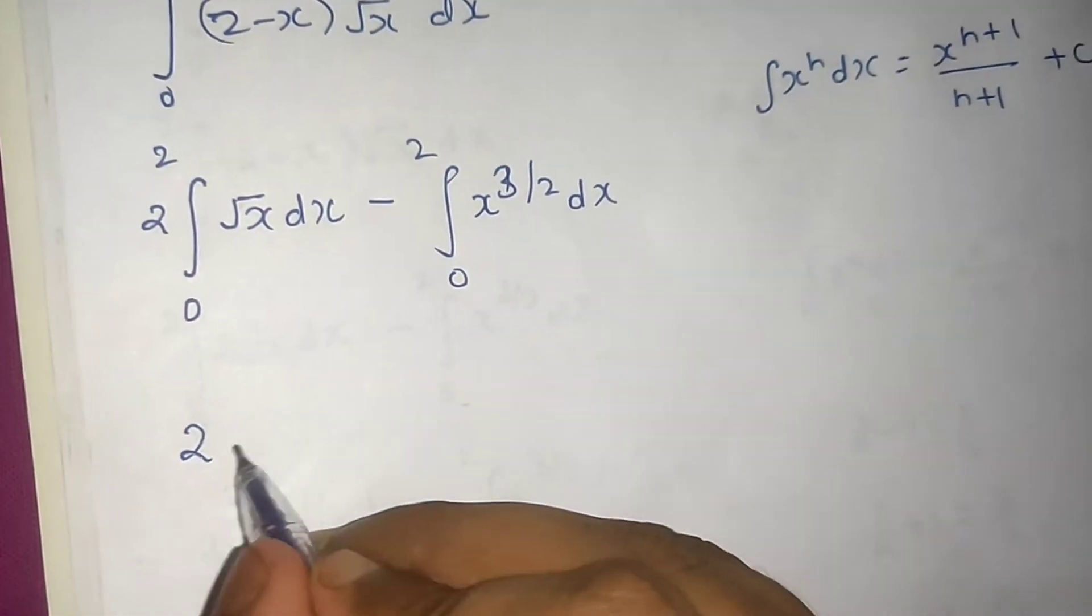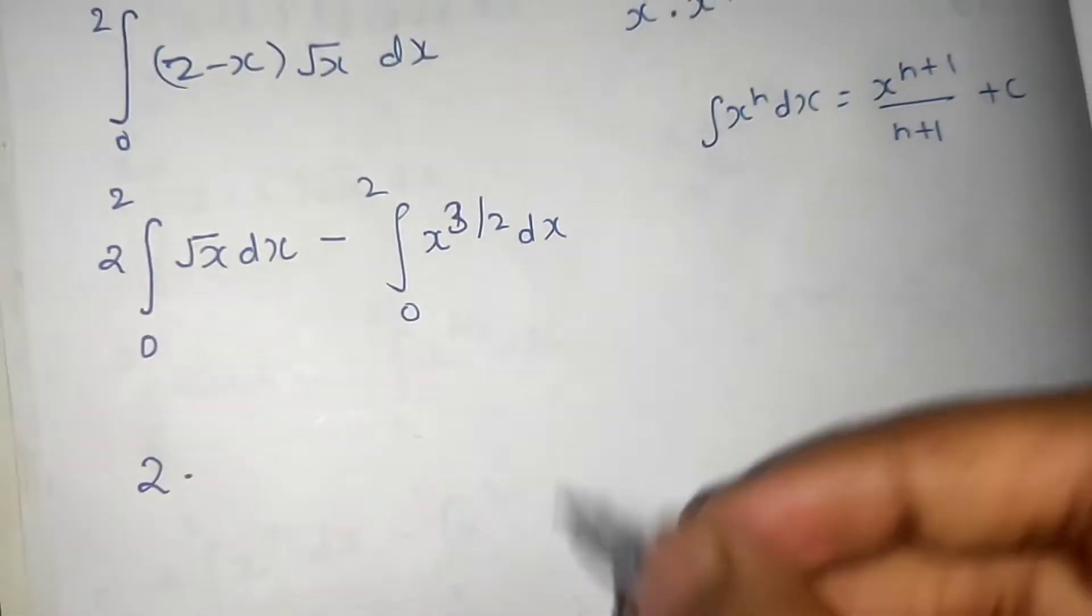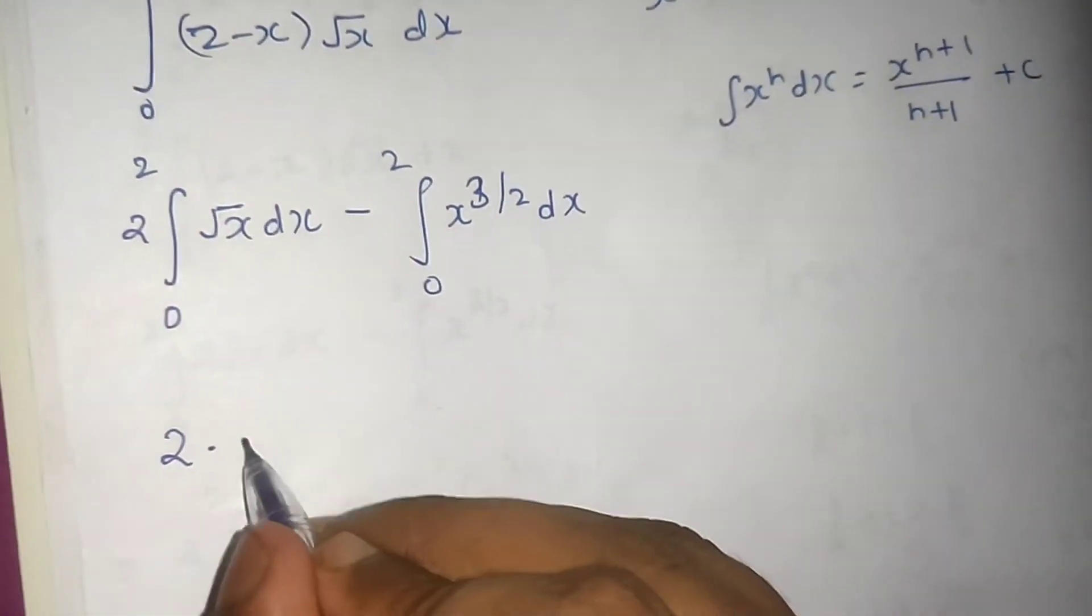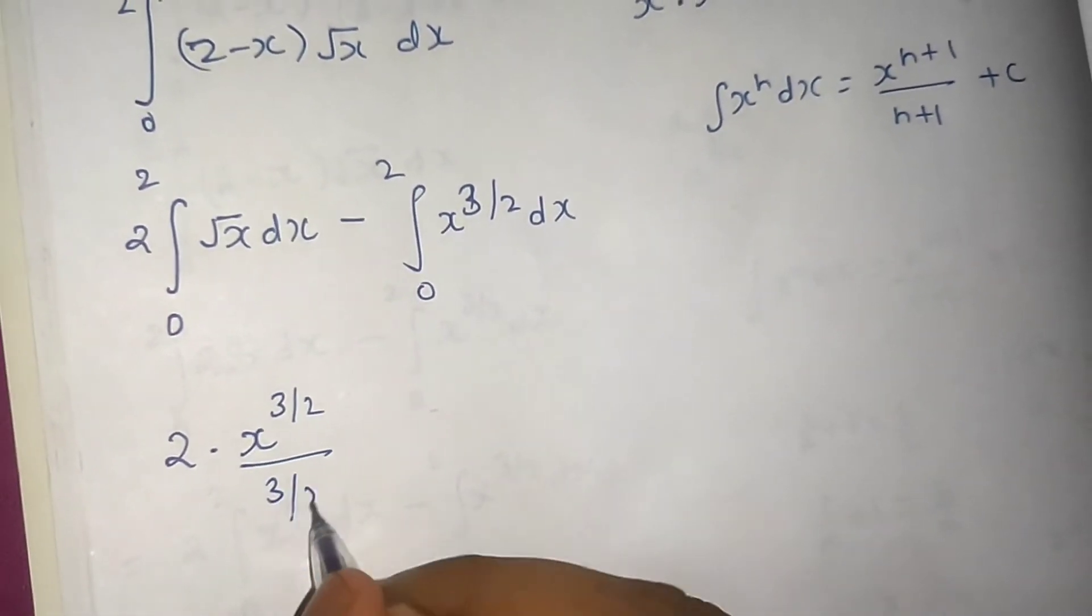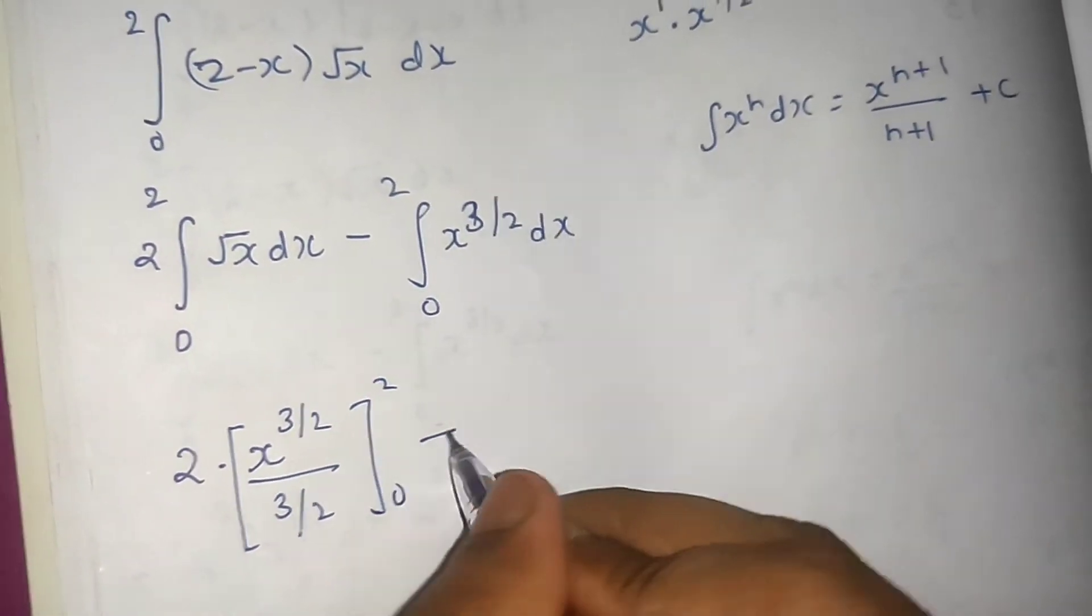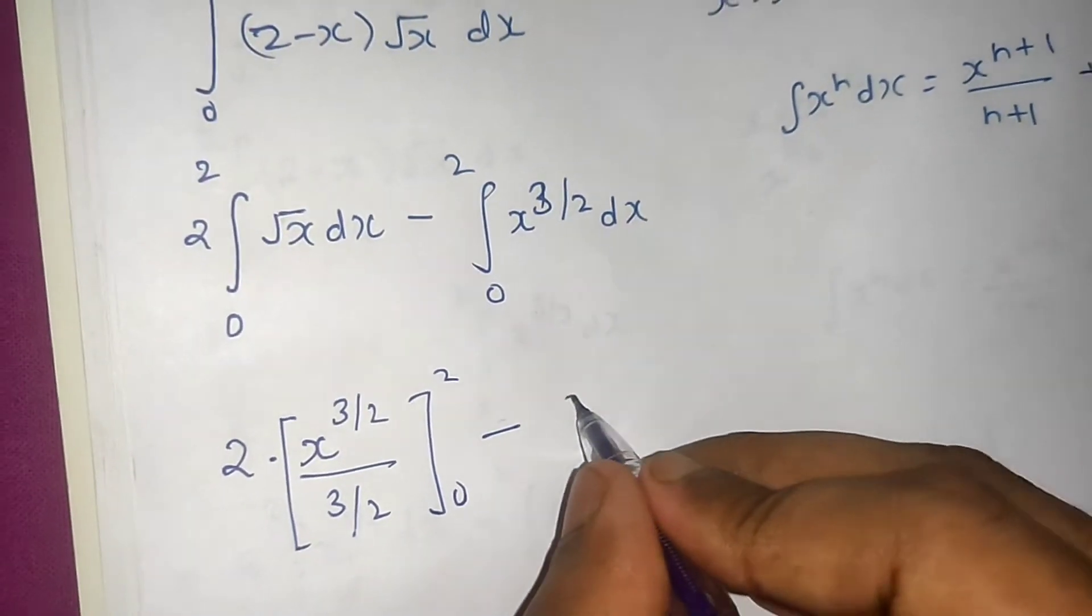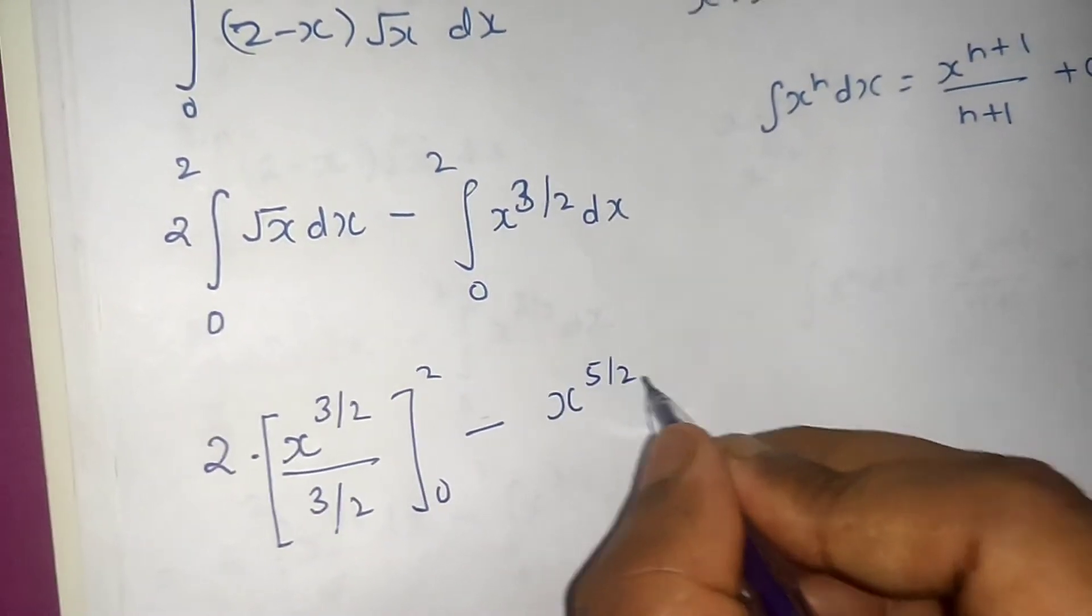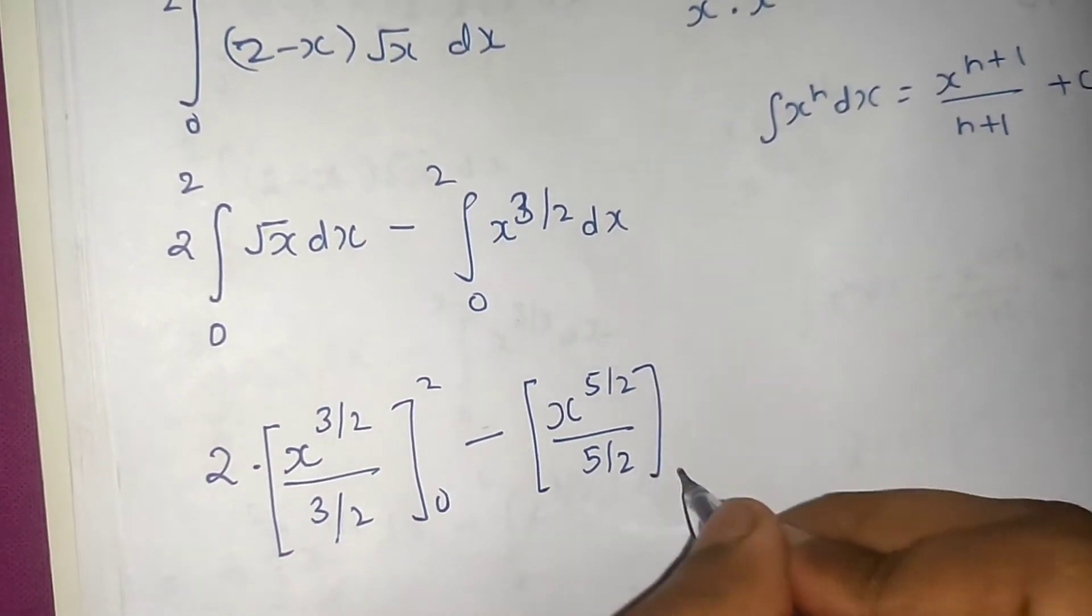So integration of root x will be x power half plus 1, that is x power 3 by 2 divided by the same power from 0 to 2. Minus this is x power 3 by 2 plus 1, that means x power 5 by 2 divided by the same power from 0 to 2.